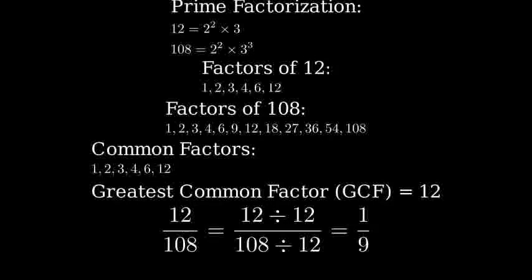To simplify the fraction, we divide both the numerator and denominator by the greatest common factor, 12. 12 divided by 12 equals 1, and 108 divided by 12 equals 9.